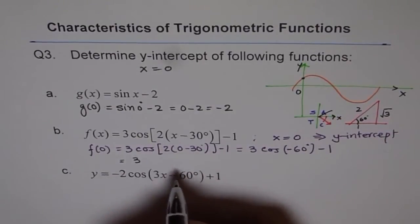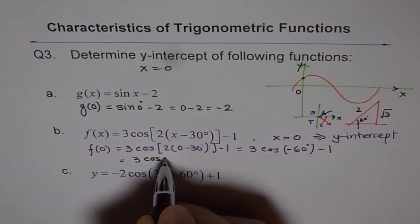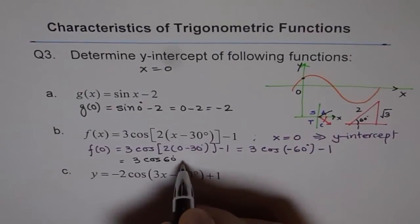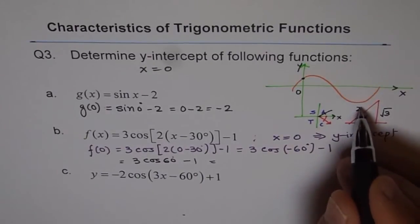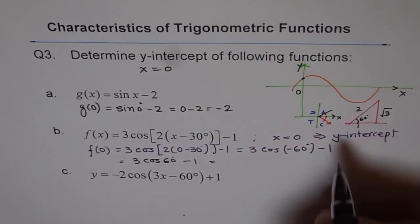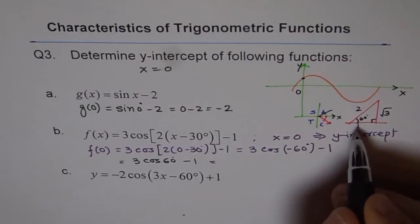So we get this as 3 cos of 60 degrees minus 1. And now cos of 60 degrees is 1 over 2, right? Adjacent over hypotenuse in this special triangle.